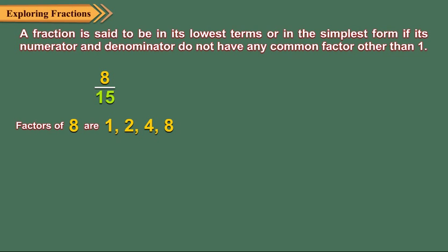All the factors of fifteen are one, three, five, fifteen. Eight and fifteen have no common factor other than one. So, this means eight upon fifteen is in its simplest form.